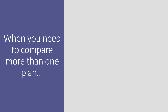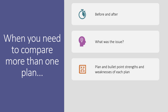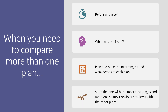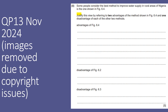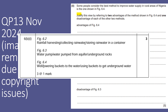A different type of justified question is when you need to compare more than one plan. When you've got that, consider the before and after, what the plan was trying to solve, what's the issue, bullet point strengths and weaknesses of each plan, and state which one has the most advantages while mentioning the most obvious problems with the other plans. I have a question here from November 2024 where images were removed due to copyright issues. However, looking at the mark scheme, the previous question asked you to identify the method. The methods were: storing water in a container, pumped water from underground, and basically buckets. The task was to select why the advantages of using the wells over the other two methods.